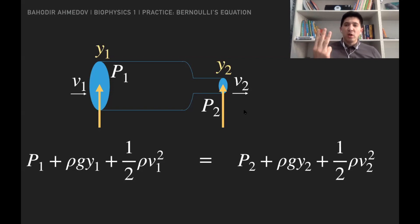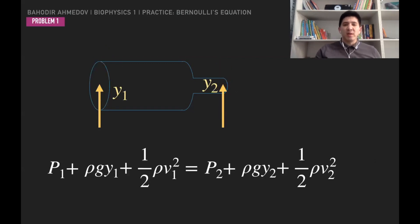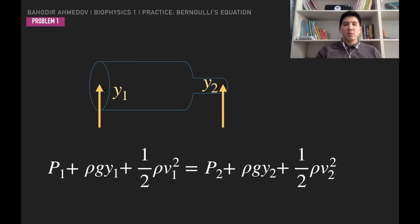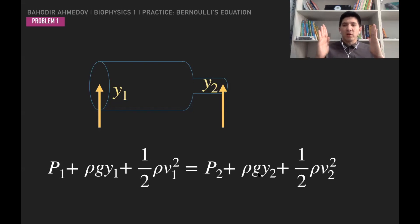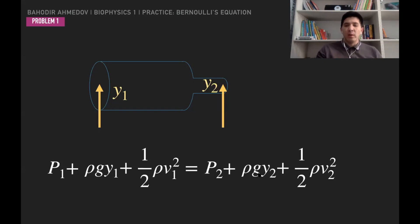In this lecture we are going to solve three problems revealing the connection between velocity, pressure, and height. The first problem: I have a pipe located horizontally but with different cross-section areas in two parts. Since the height is equal — y1 equals y2 — the terms rho*g*y1 and rho*g*y2 are the same and cancel out. So in this problem we focus on the connection between velocity and pressure.